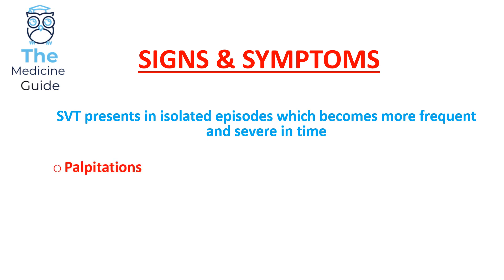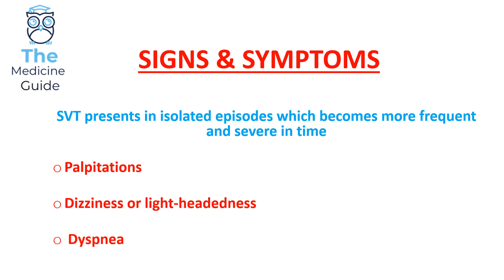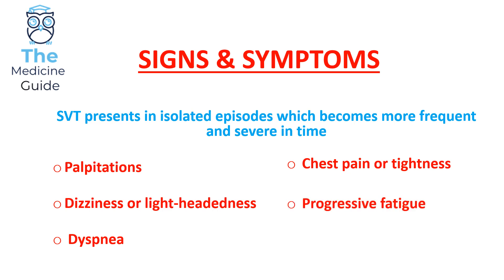Patients can present with palpitations, dizziness or lightheadedness, dyspnoea — which describes shortness of breath — chest pain or tightness, progressive fatigue, and syncope. In adults with SVT, syncope is quite rare. However, when syncope does present in these patients it's often a warning sign, as they have an increased risk of sudden cardiac death.